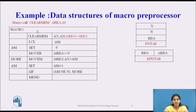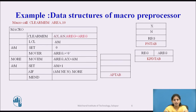Next we see the macro call for the given macro. The name of the macro is CLEAR M. The first actual value is AREA and the second actual value is 10. We build the Actual Parameter Table: the formal parameter X has actual value AREA, N has actual value 10, and REGISTER has the default value A_REGISTER. We enter these into the AP tab: AREA, then 10, then A_REGISTER.